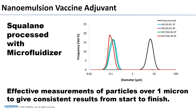A squalene run through a microfluidizer shows that the unprocessed material was about 10 microns. After the first pass you can start to see a peak at around 100 nanometers. Looking at different formulations and multiple passes — with three passes you can still see a little residual material at the 10 micron range. The advantage of the LA-960 is that you're able to look at your entire process from the starting material at 10 microns, which is too large for comfortable dynamic light scattering, all the way down to about 100 nanometers, with consistent results from start to finish using only one analyzer.